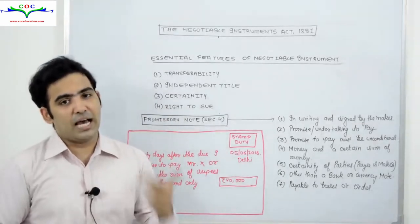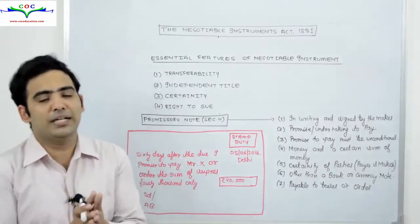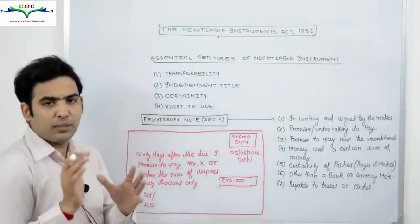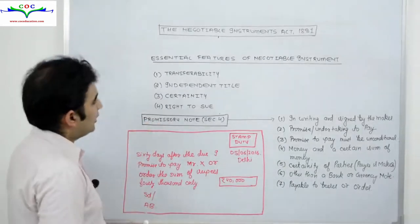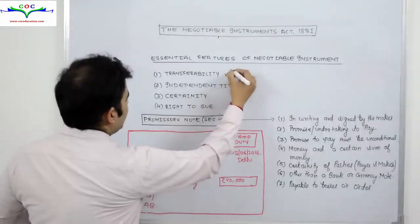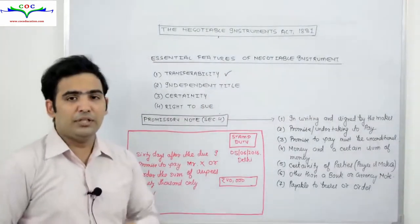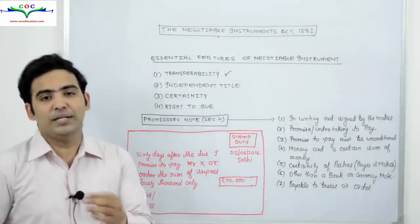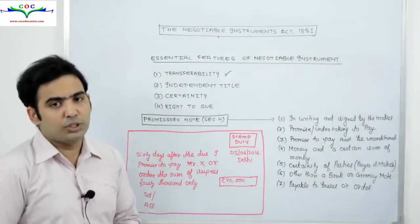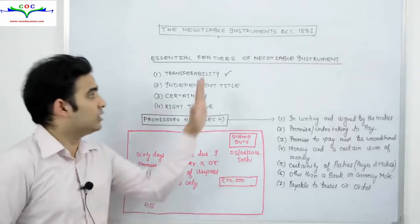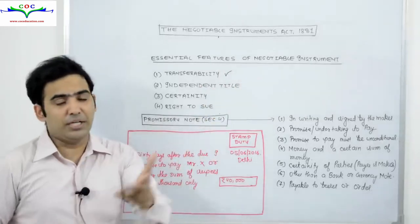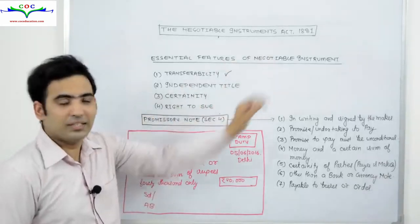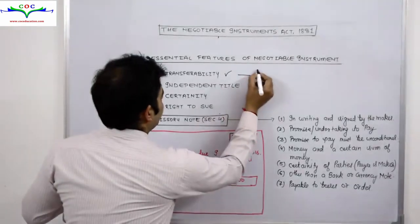Promissory Note, Bills of Exchange और Cheque — इसके अलावा किसी को भी हम Negotiable Instrument की definition में include नहीं करते हैं। अब बात करते हैं कि इन सारे Negotiable Instruments में कौन-कौन से common features हैं। First feature is transferability — जो भी Negotiable Instrument होगा, that instrument shall be transferable। Transfer करने के दो तरीके होते हैं।